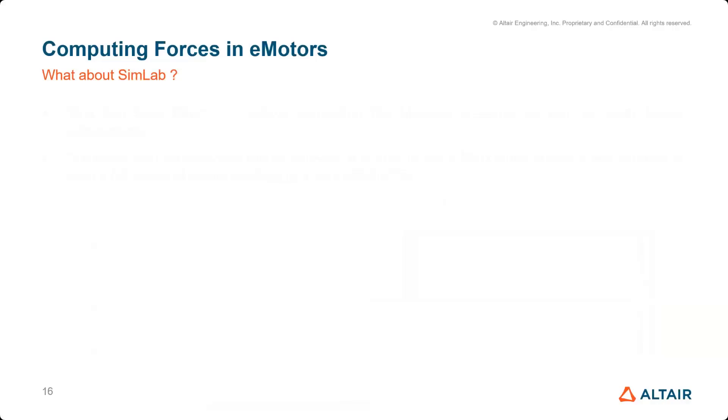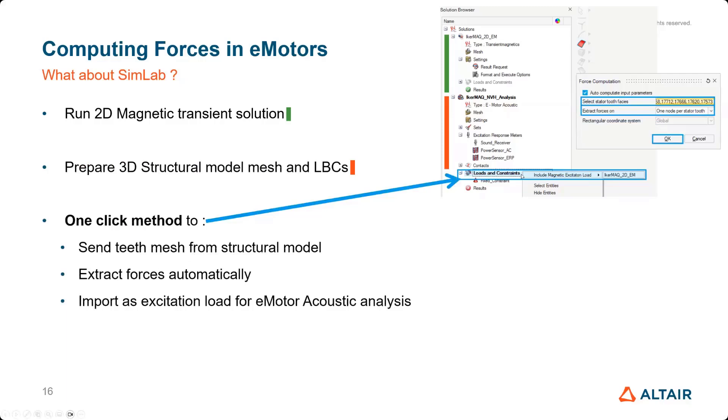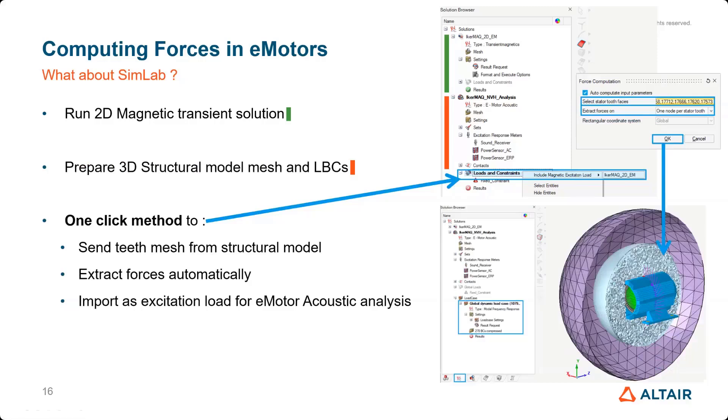And then the second tool I want to mention is of course SimLab, as we are transitioning from Flux to SimLab. Then all of the workflow I've shown you is inside the import-export context. But you may know already from the SimLab environment, we can prepare our 2D magnetic transient solution. We can also prepare in the same model the 3D structural model with the housing and all the power sensor, sound receiver for the e-motor acoustic. And actually, if you want to go from one to the other, they are just a one-click method where you can include the magnetic load excitation from the magnetic to the structural. And the steps that we've done in the import-export context can be done in one click automatically. You still have the choice for one node per tooth or nodal forces. And then automatically it will create the loads applied to your structural model to be solved in the optic structure.